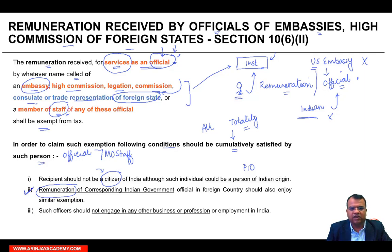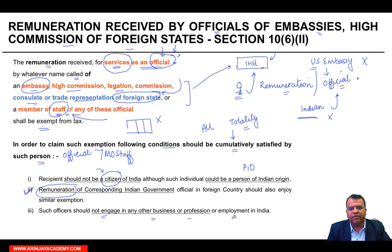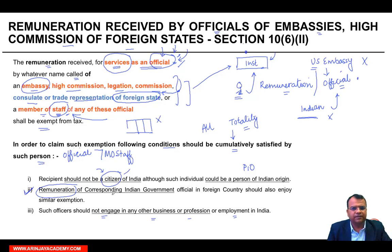Such officials should not engage in any other business or profession or employment in India. ऐसा नहीं है कि आप staff member बन गए, exemption ले ली, और साथ में चार और काम जोड़ देते हैं — नहीं. You should not be engaged in any other business or profession or employment in India. To summarize: there are some specified institutions; if the person gets remuneration as an official or as a member of staff, it will be exempt provided this person is not a citizen of India, the corresponding Indian government official's remuneration is exempt in that country, and such officials are not engaged in any other business or profession in India.